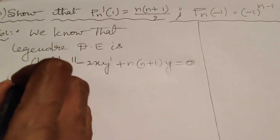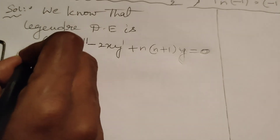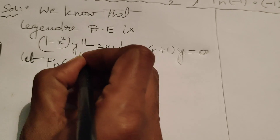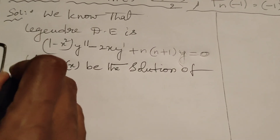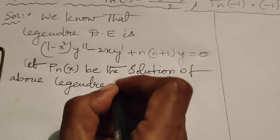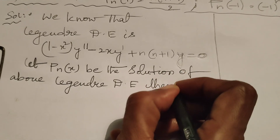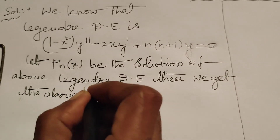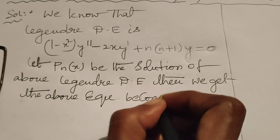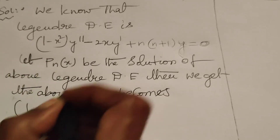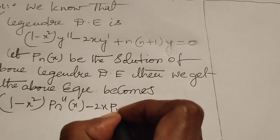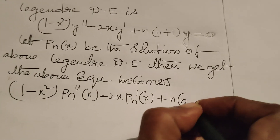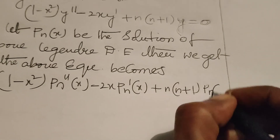Let Pn(x) be the solution of the above Legendre differential equation. Then we get the above equation becomes: (1 - x²)P''n(x) - 2x·P'n(x) + n(n+1)·Pn(x) = 0, assuming this as equation number 1.